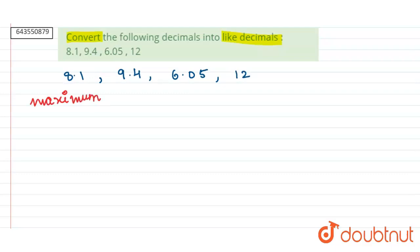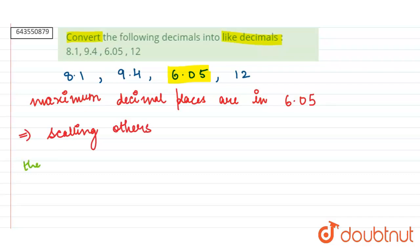Here we can note that maximum number of decimal places are present in 6.05. Therefore, we have to scale the others according to two decimal places.